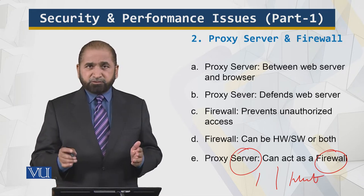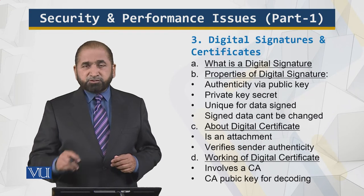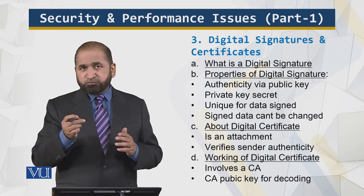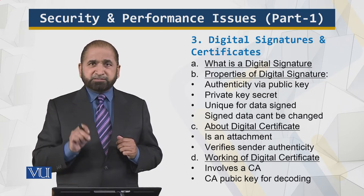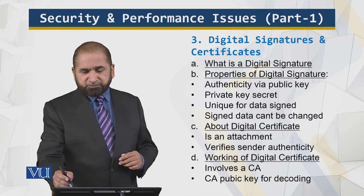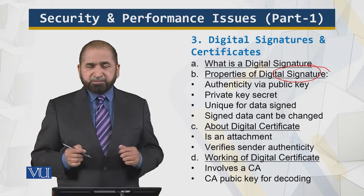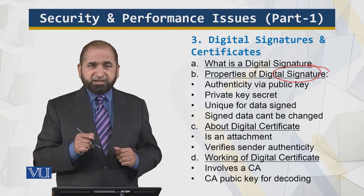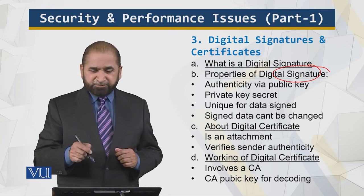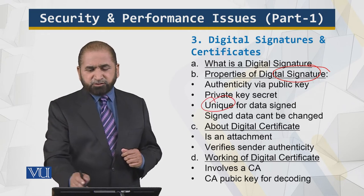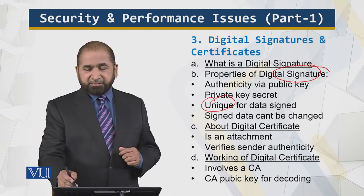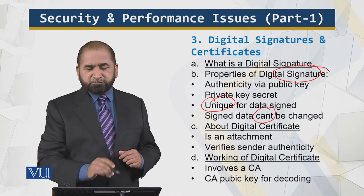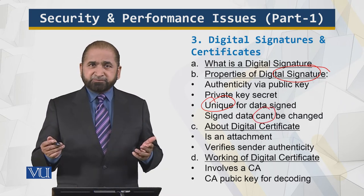We also need to ensure control through digital signatures and digital certificates. A digital signature generates a piece of code corresponding to the contents of the message along with a certain key. Its properties include: authentication through a public key, while the private key is kept secret. This ensures authenticity and integrity. The signature is unique for the data that has been signed. If the data is changed, that signature string also changes and will not match — so signed data cannot be changed without detection.